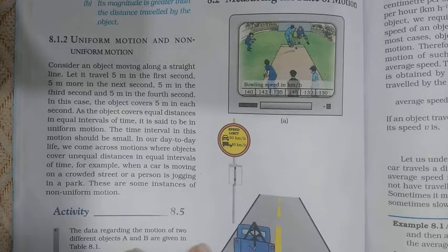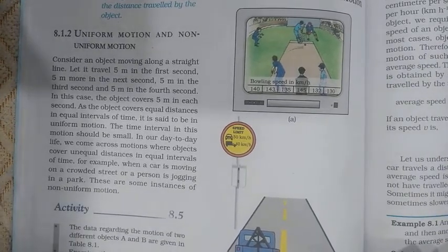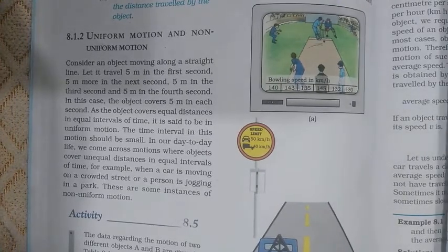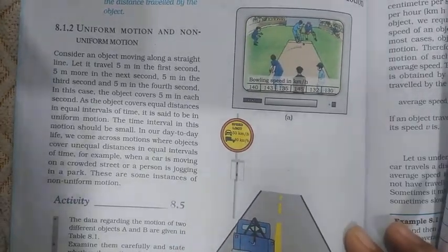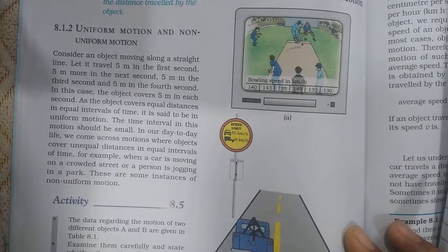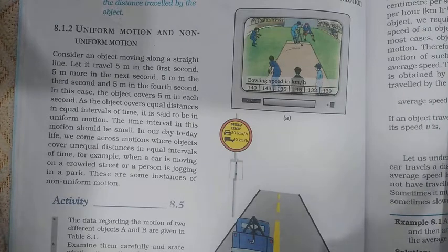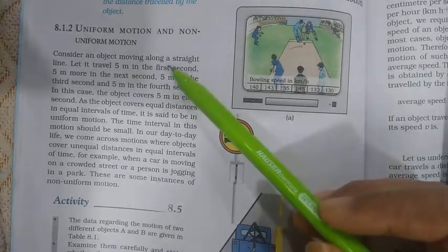Good morning, Class 9th science students. We have discussed in the earlier video distance and displacement. I hope you understand how to differentiate between distance and displacement. Displacement means the shortest distance covered by an object — it is distance with direction. Distance is a scalar quantity, but displacement is a vector quantity.